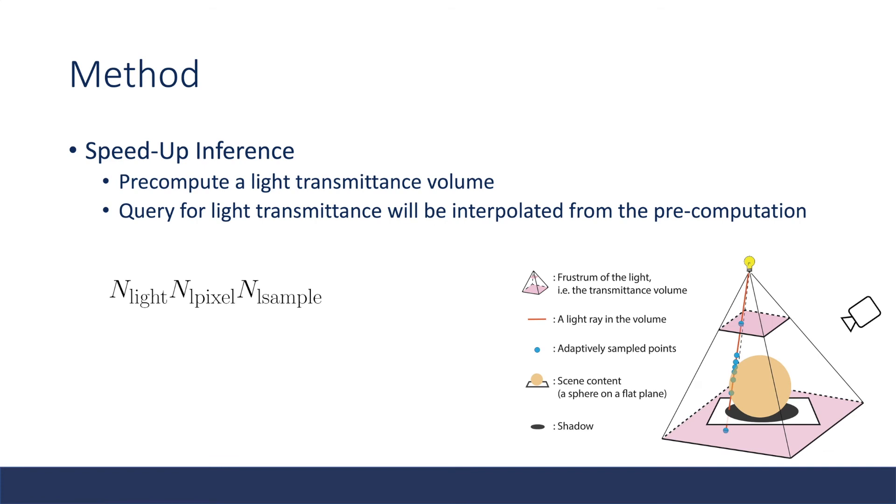The authors propose a way to speed up the inference. Basically, it is trying to pre-compute a light transmittance volume. Here is the point light position. I just shoot rays from this point light and record the transmittance of all these sample points. During this process, I need to compute this number of queries: the number of lights (here it is one), the number of pixels of this image, and the number of samples along this ray.